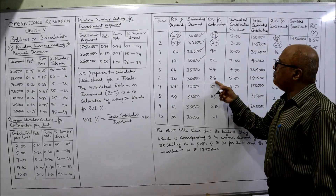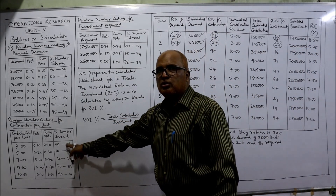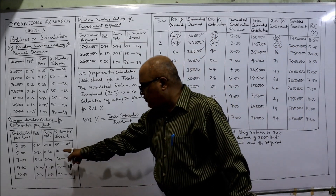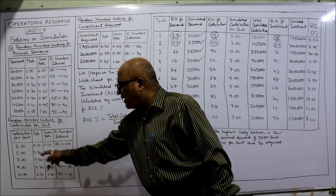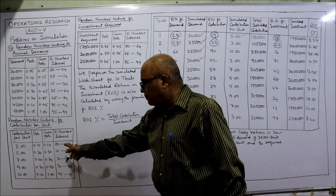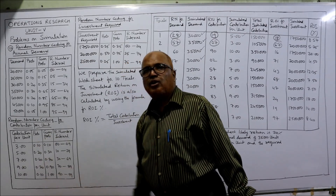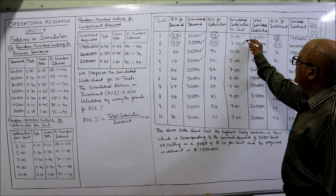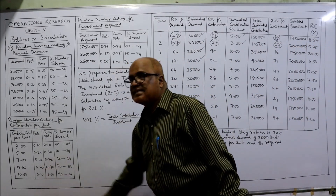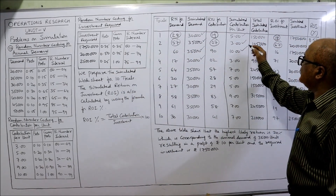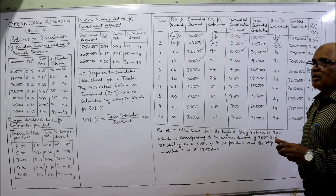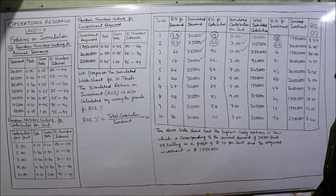Now for contribution: random number 19 falls between 10–29, so contribution is 5 rupees. Random number 07 lies between 00–09, so contribution is 3 rupees. Random number 90 falls in 90–99, giving 10 rupees. All contribution per unit values are simulated similarly by locating each random number in the contribution intervals.